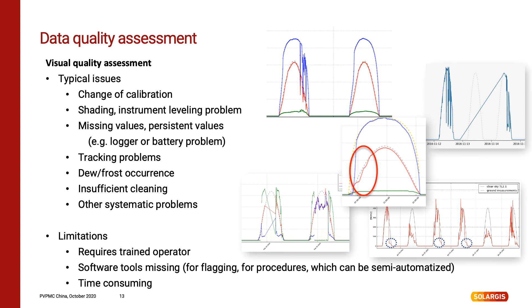The fifth and by far most time-consuming step is visual control of measured data. This requires a trained operator to sit and check measured profiles day by day, hour by hour. He must mark intervals where data is wrong or suspicious. This is the last step in quality control where data problems can be detected. Issues detected only at this stage are not easily detectable by automatic algorithms, so human interaction is needed.